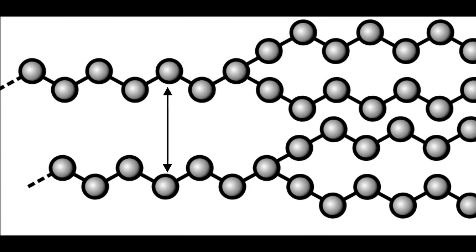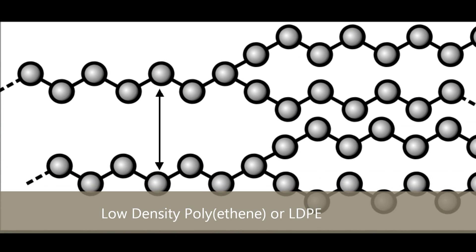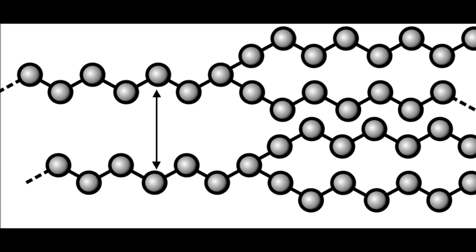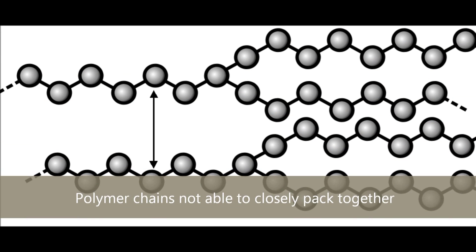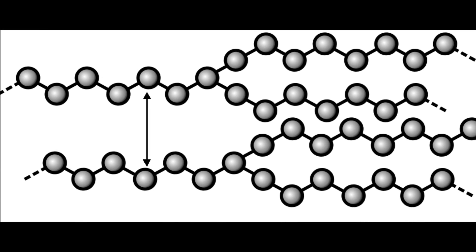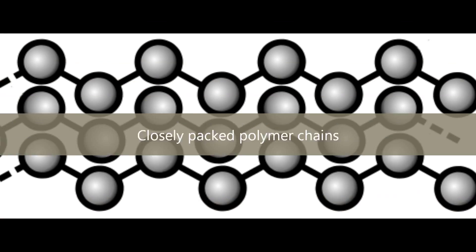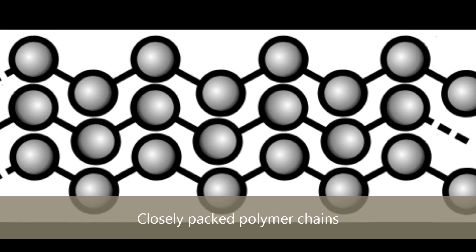So why is polythene able to exhibit both hard and flexible properties? This refers to the microstructure of the polymer. Branching of the main chain during polymerisation leads to low density polythene — referred to as such because the branches mean the chains are unable to closely pack together, leading to a flexible material used in bin liners. Conversely, in high density polythene, the straight chains are able to pack closely together to form a stiff material.